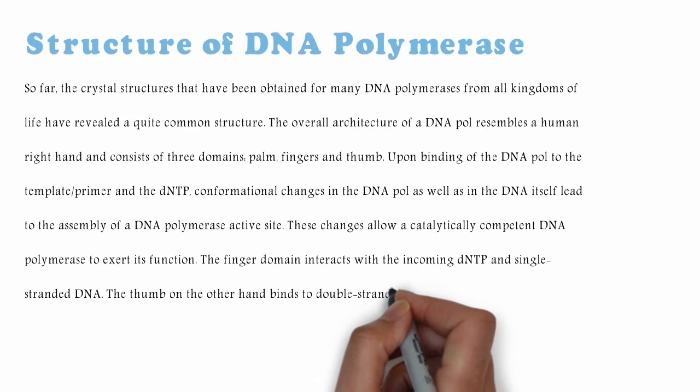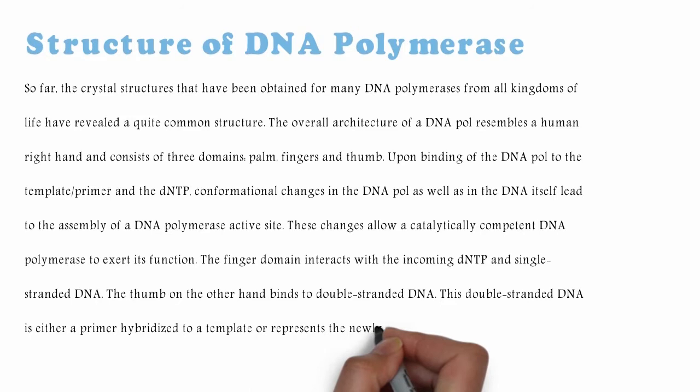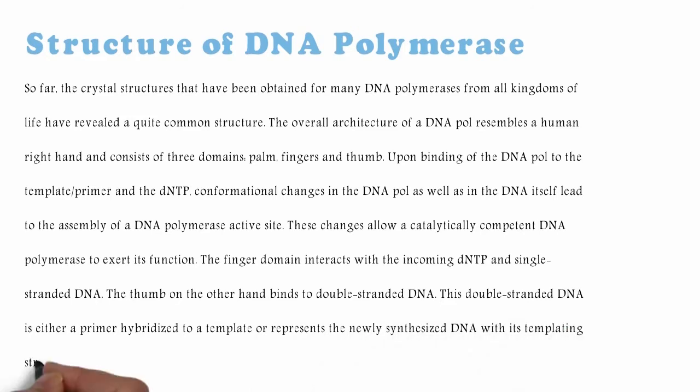These changes allow a catalytically competent DNA polymerase to exert its function. The finger domain interacts with the incoming dNTP and single-stranded DNA. The thumb, on the other hand, binds to double-stranded DNA. This double-stranded DNA is either a primer hybridized to a template or represents the newly synthesized DNA with its templating strand.